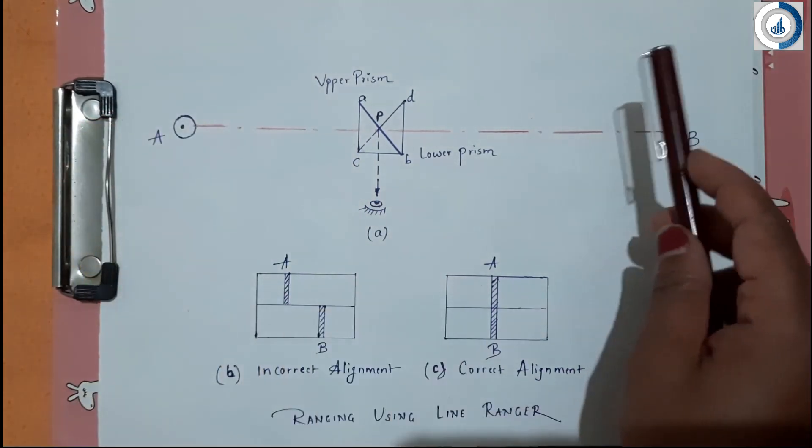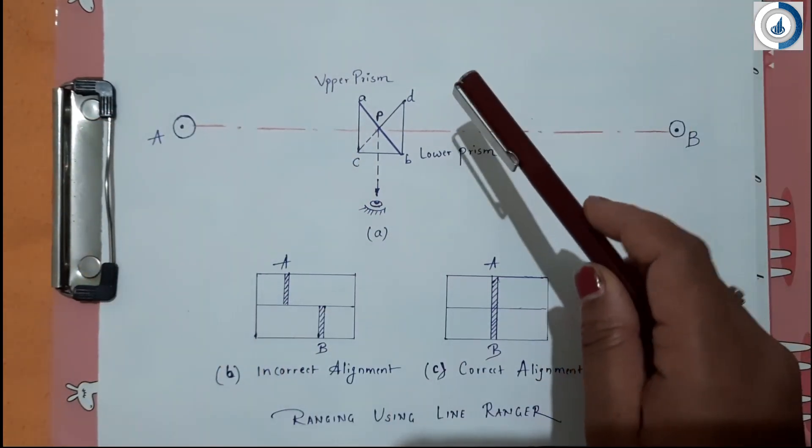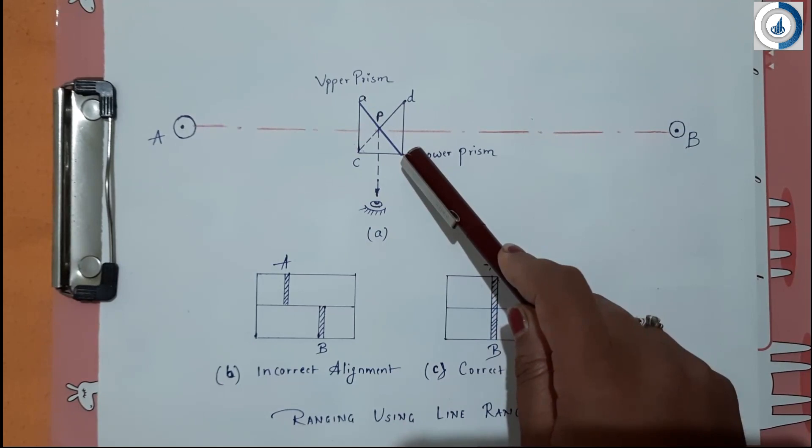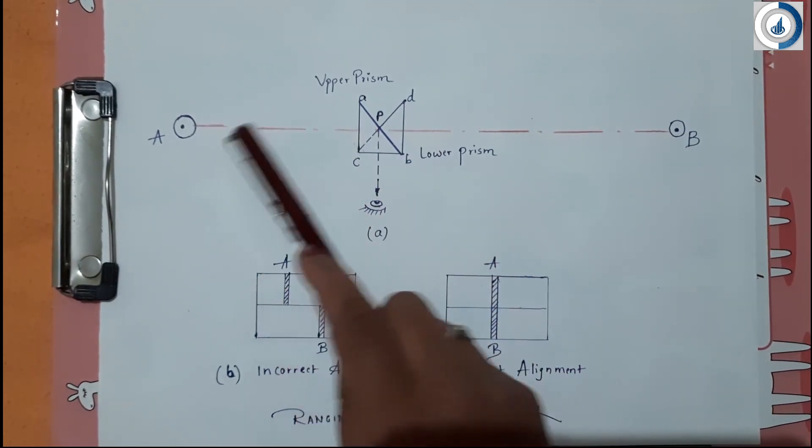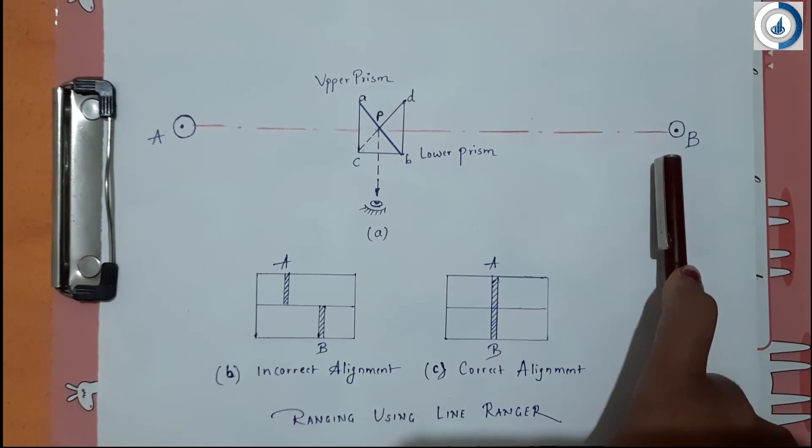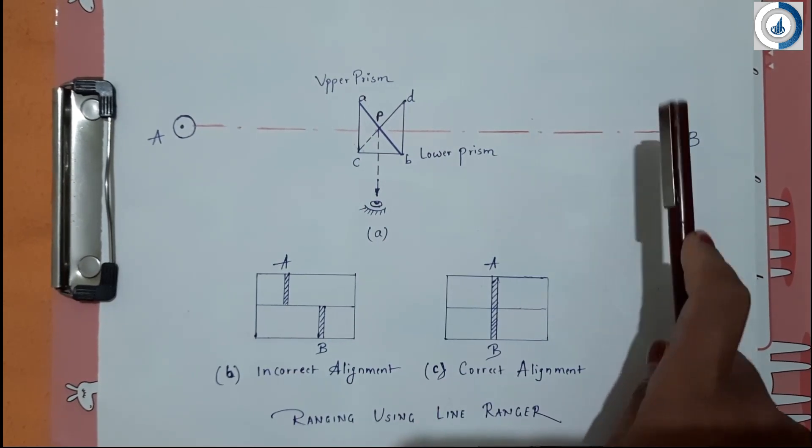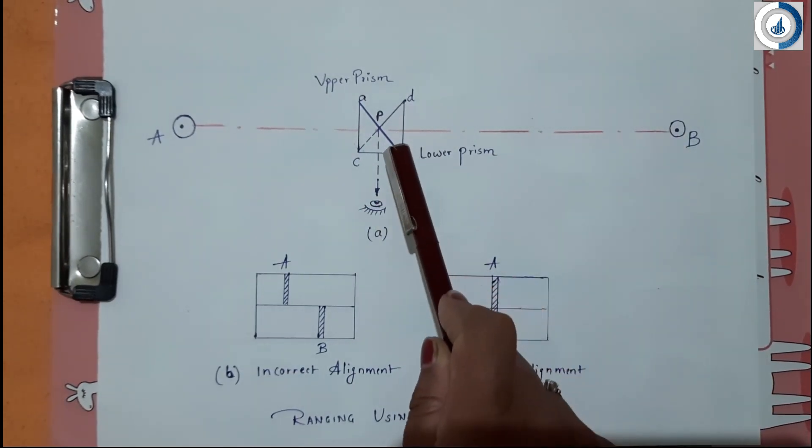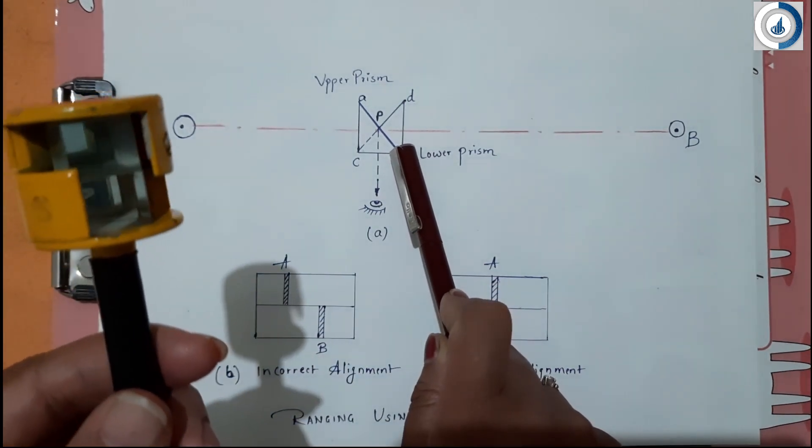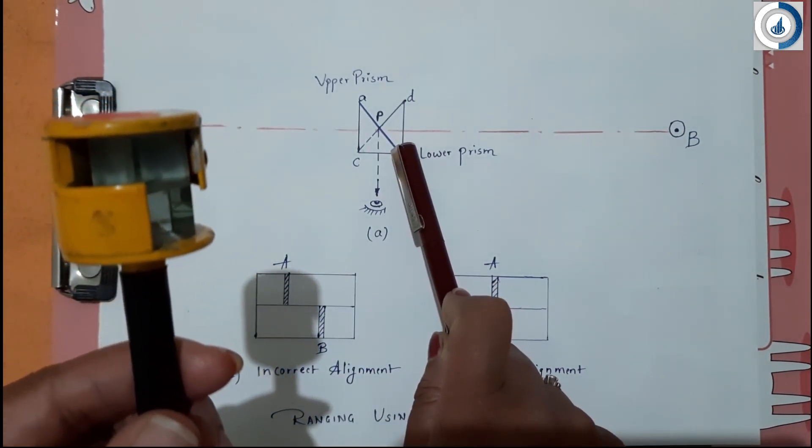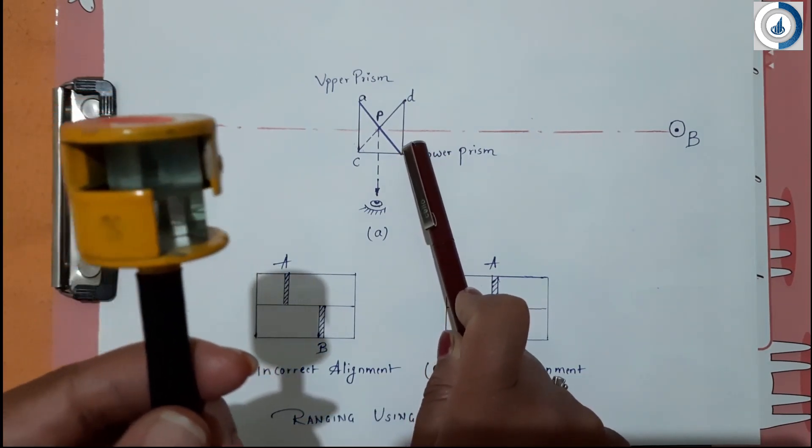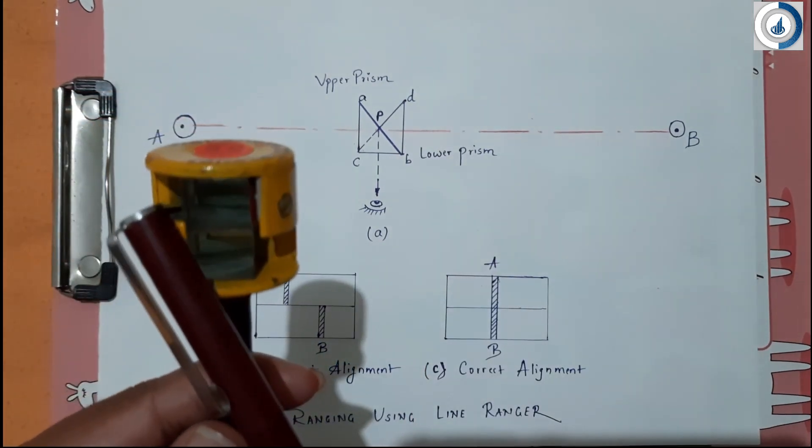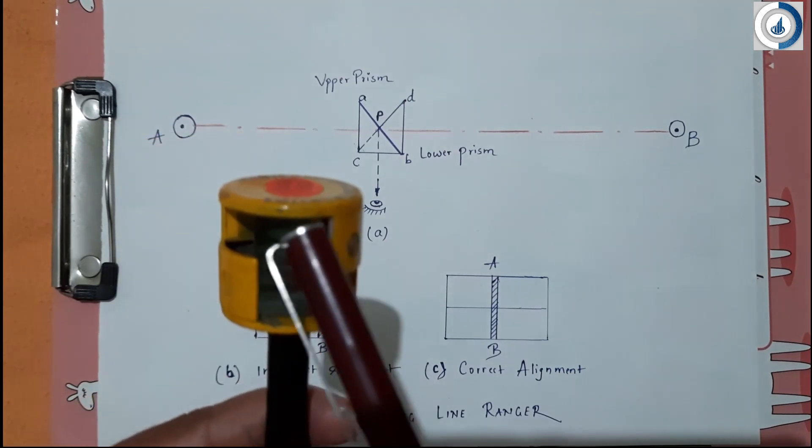Now we shall see how the line ranger works. To range point P, two ranging rods are fixed at the ends, that is A and B, which are two ends of the survey line. The surveyor will stand holding the line ranger very near to line AB by eye judgment.